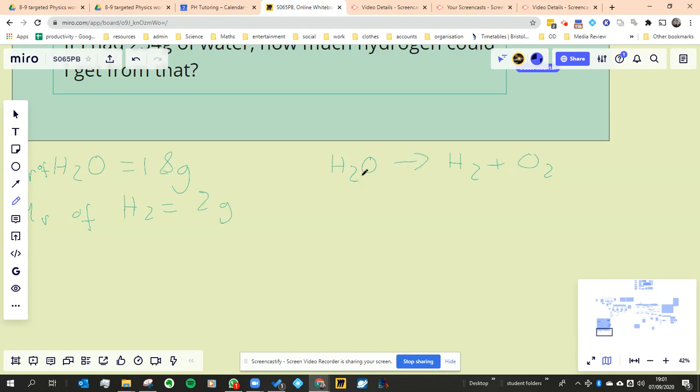Because what it's saying at the moment is that one mole of water would produce one mole of hydrogen, one mole of oxygen. Well, that's not true, because you can see just by the numbers that don't add up. So we have to balance it to make it true. So now it's balanced. And now we can say that equation tells me that if I had two moles of water, it would produce two moles of hydrogen and one mole of oxygen.